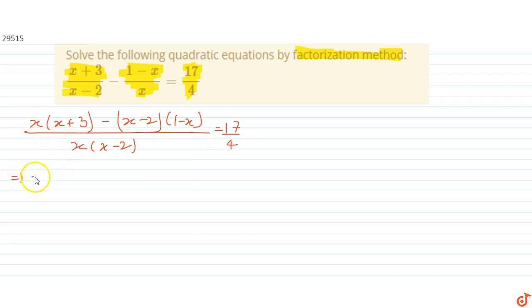We get x² + 3x - x + x² + 2 - 2x, whole divided by x² - 2x, and this equals 17/4. This implies that (2x² + 2)/(x² - 2x) equals 17/4.